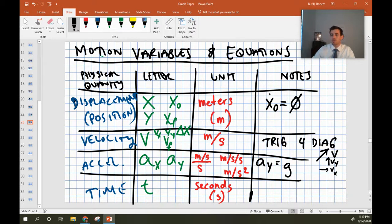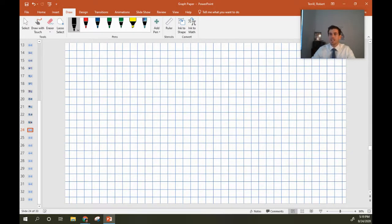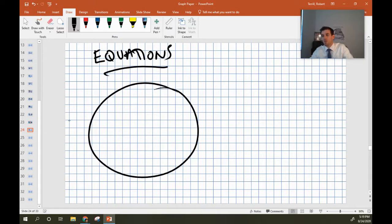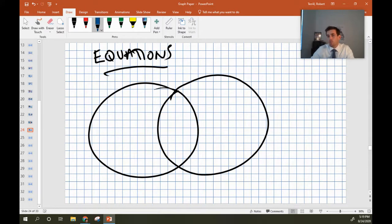So those are the motion variables and equations. Now let's look at the equations themselves. These are called the kinematic equations, and there's three important ones that you guys should know for now. And then if you find yourself using other ones, you'll kind of learn them as you go. But these are the ones that are on the formula sheet, these are the ones that you're expected to know.